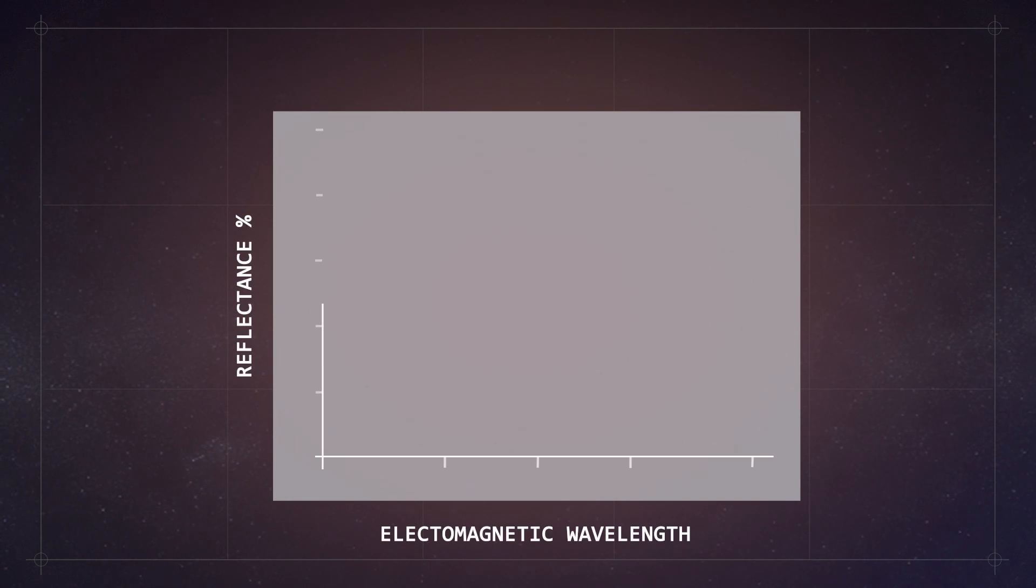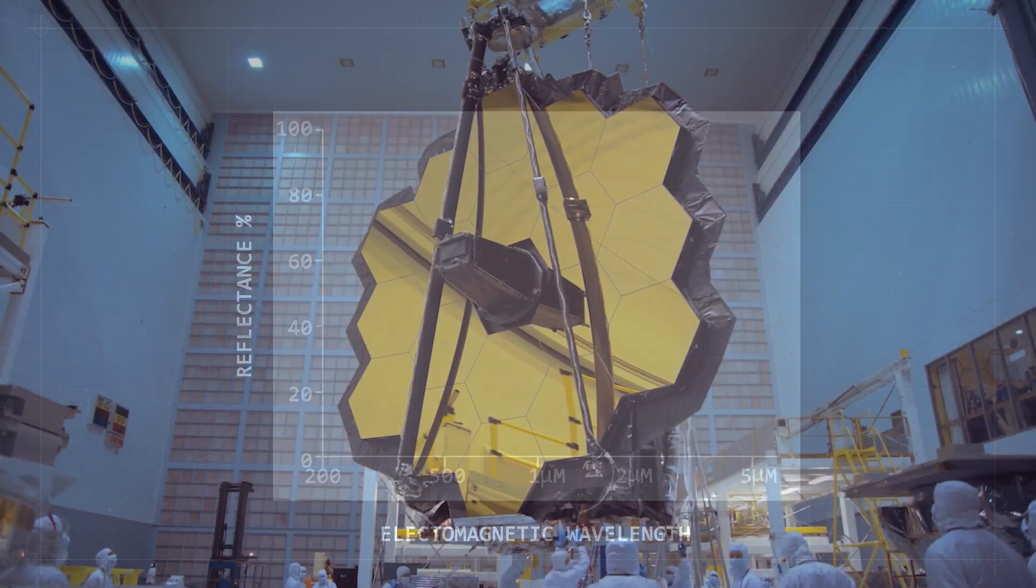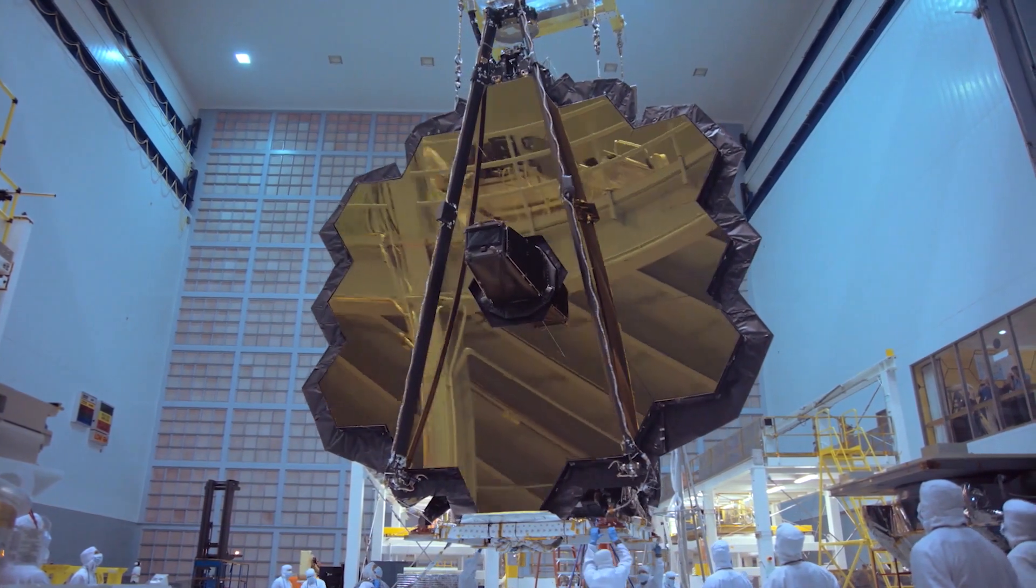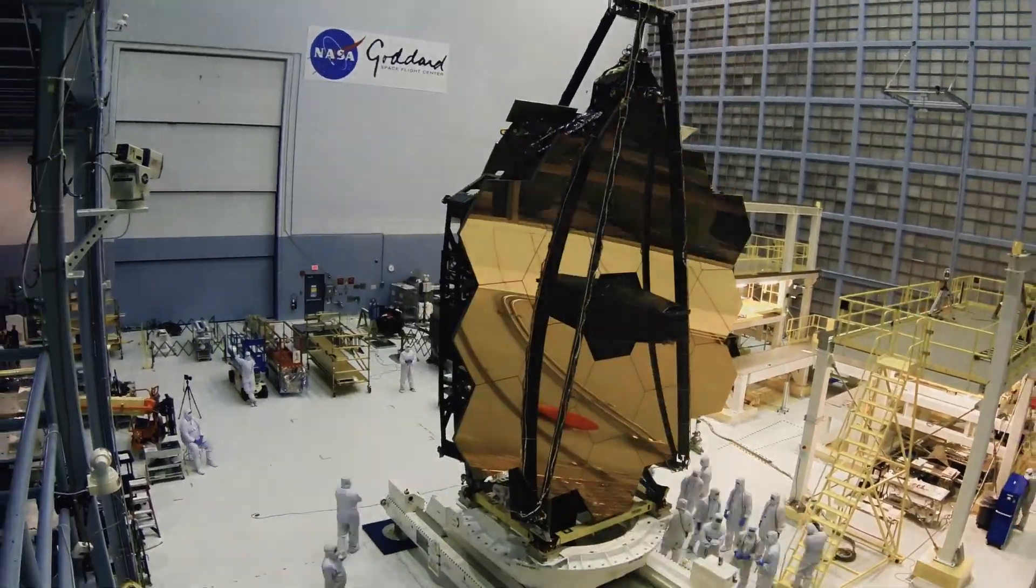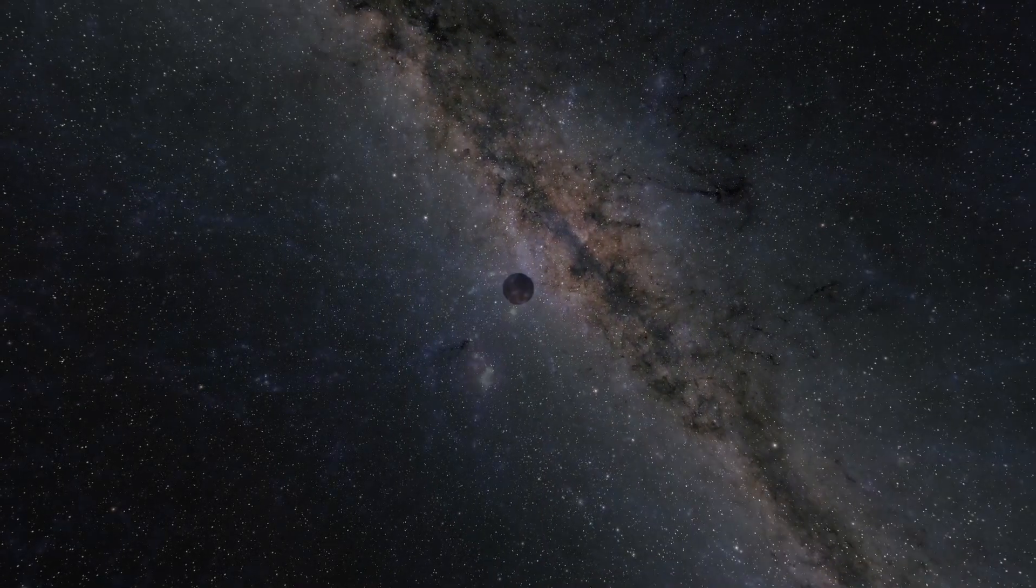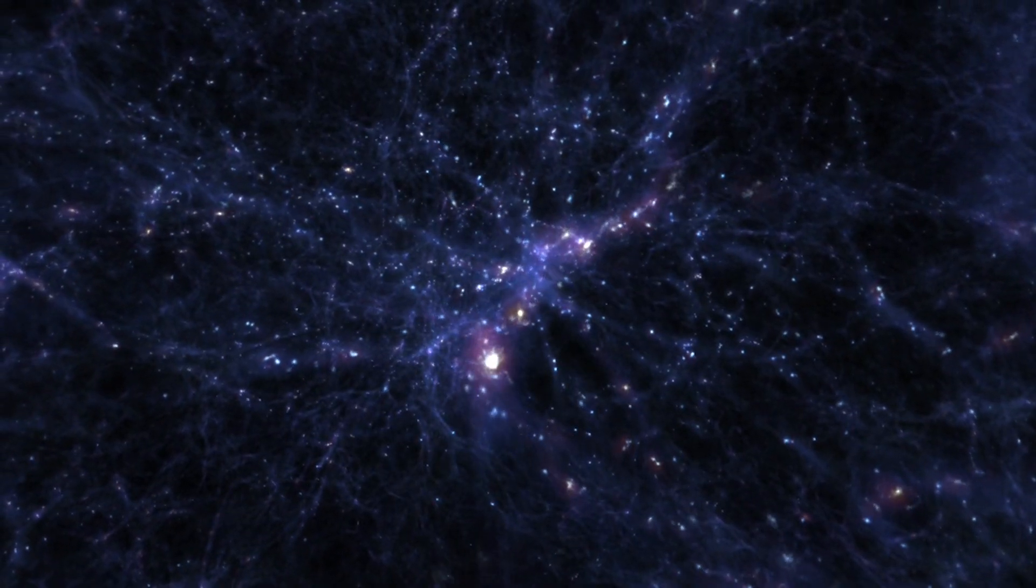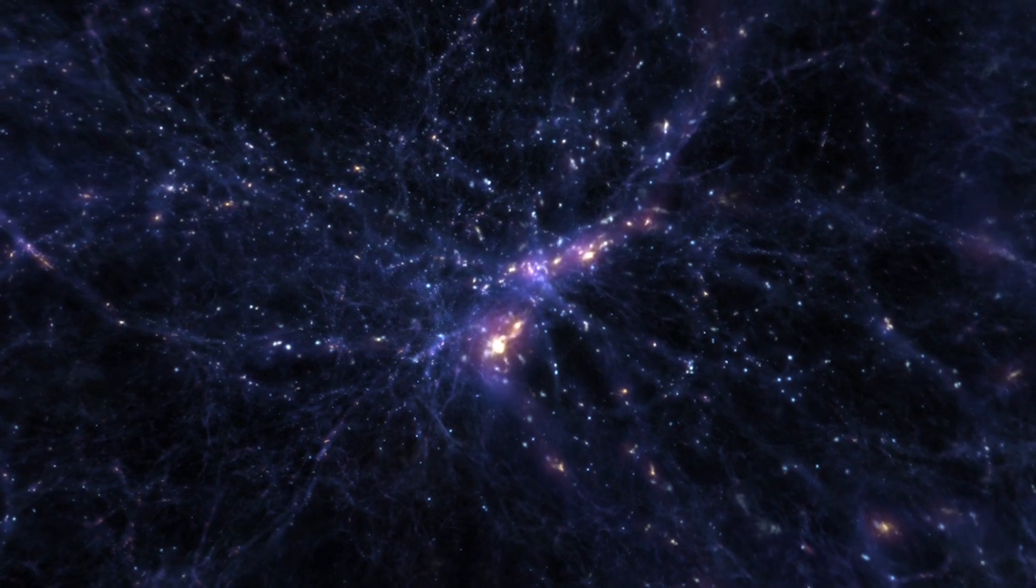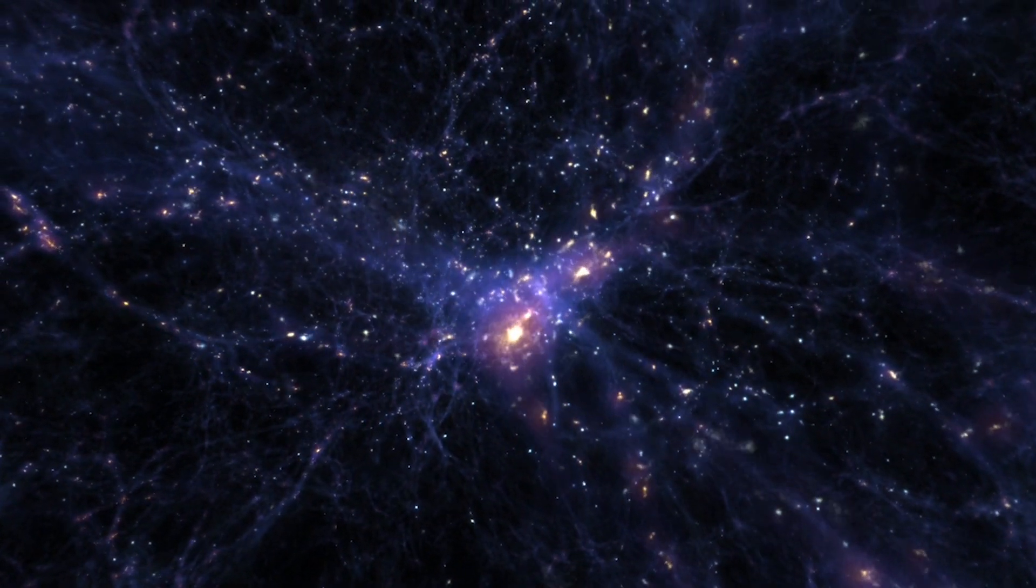What is the James Webb Space Telescope? The James Webb Space Telescope is the largest, most powerful space telescope ever built. It will allow scientists to look at what our universe was like about 200 million years after the Big Bang. The telescope will be able to capture images of some of the first galaxies ever formed.